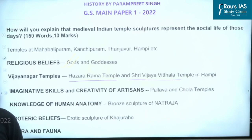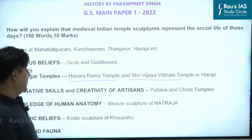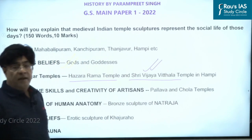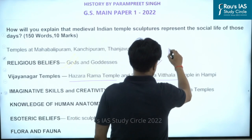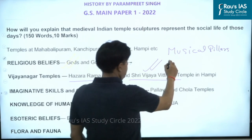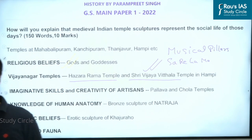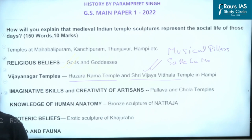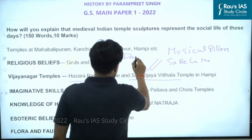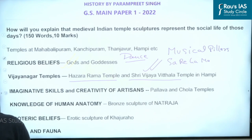Temple sculptures also tell us about the form of art popular among people during those days. For example, the Shri Vijaya Vittala temple is famous for its musical pillars, also known as Sare Gama pillars. This kind of architecture indicates that music as a form of art would have been very popular at that time. Apart from music, from temple sculpture we also get information about dance, because many sculptures show images in various dancing poses.